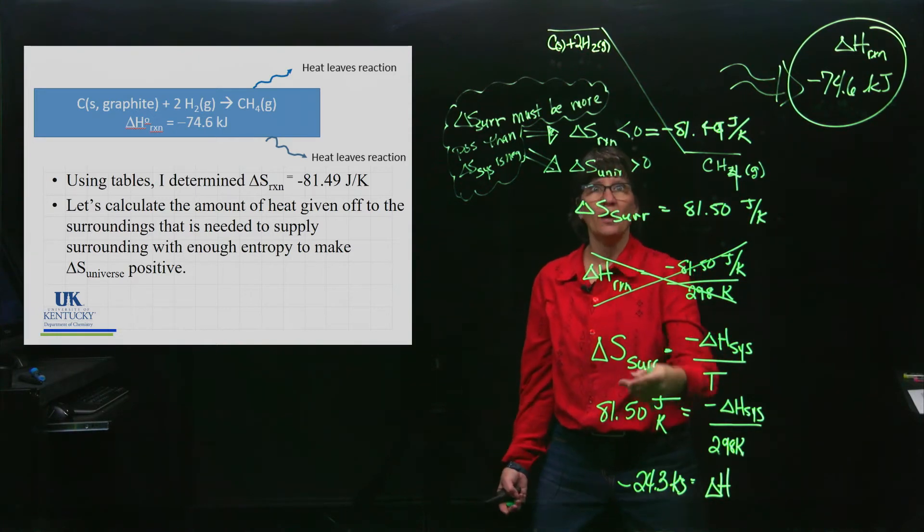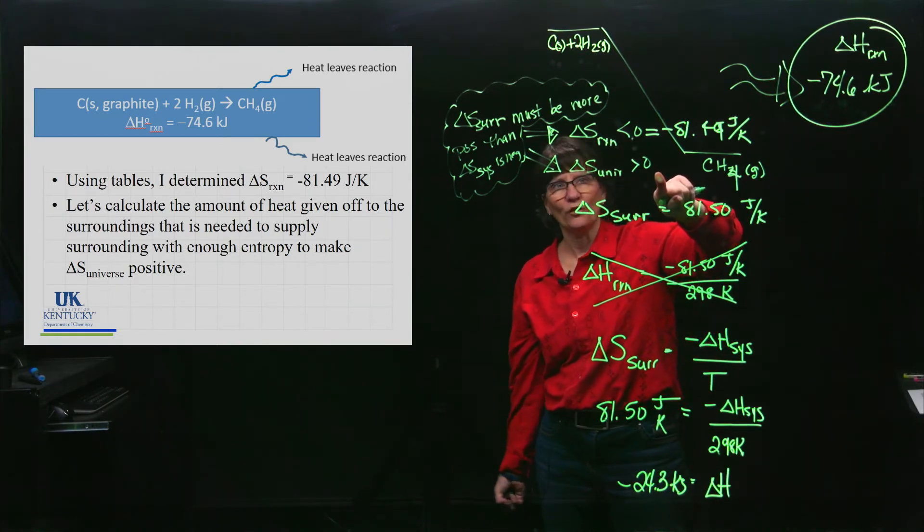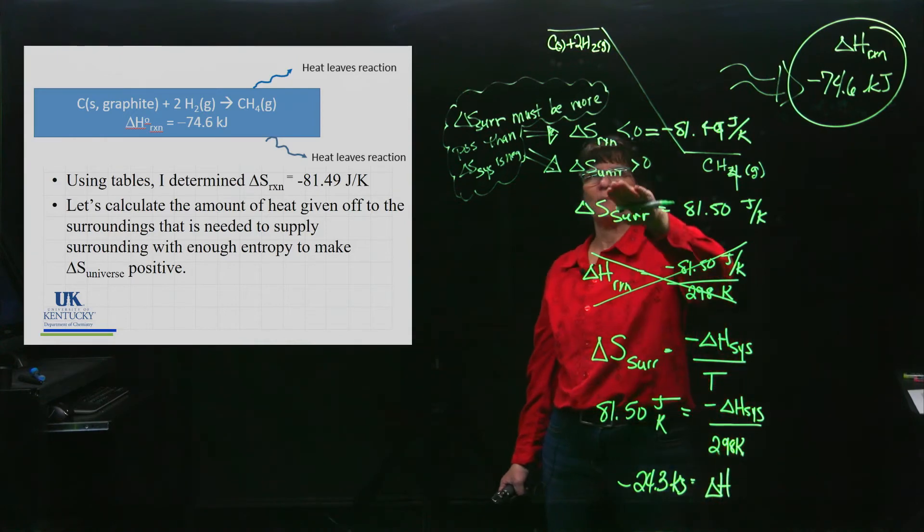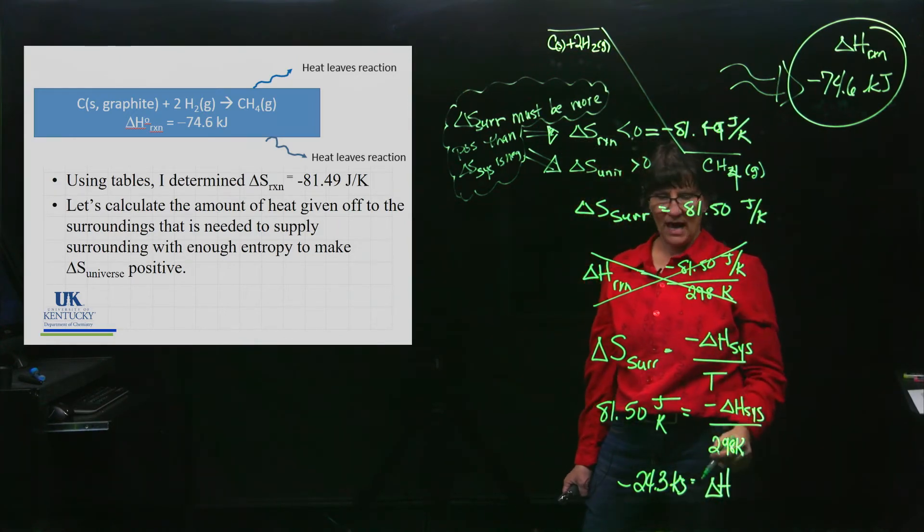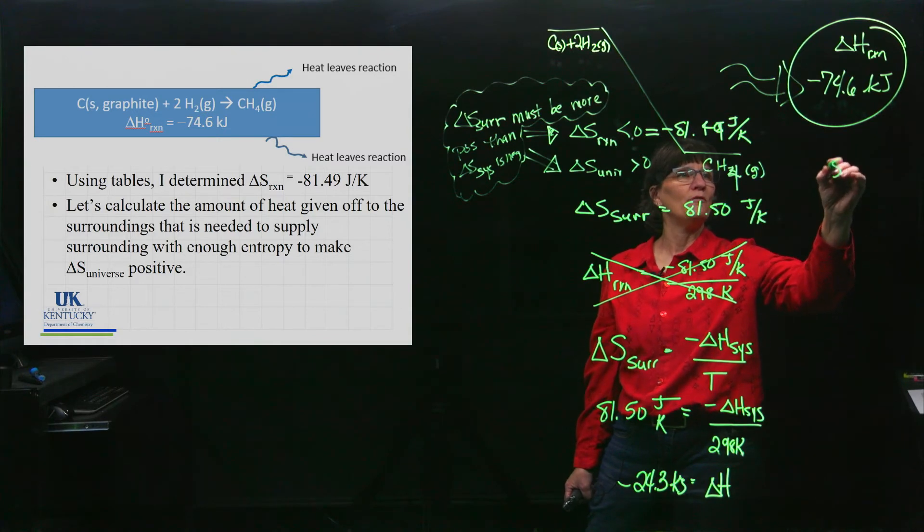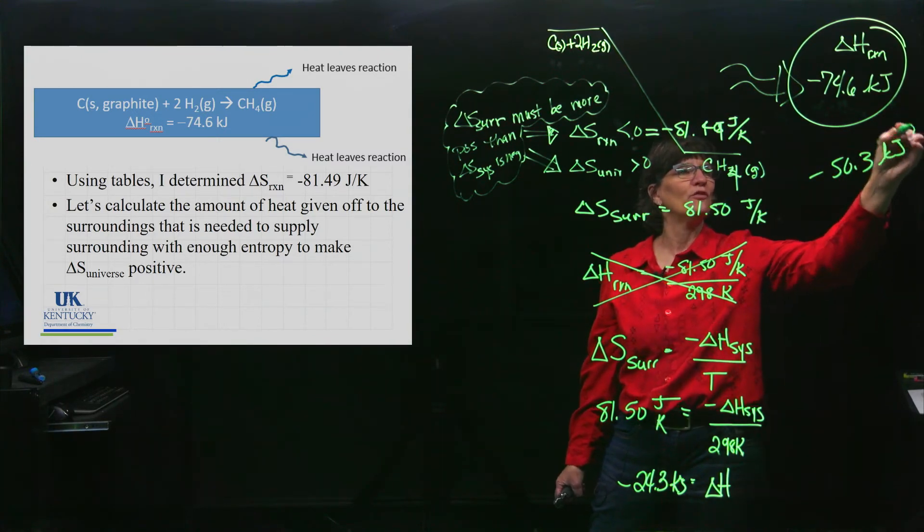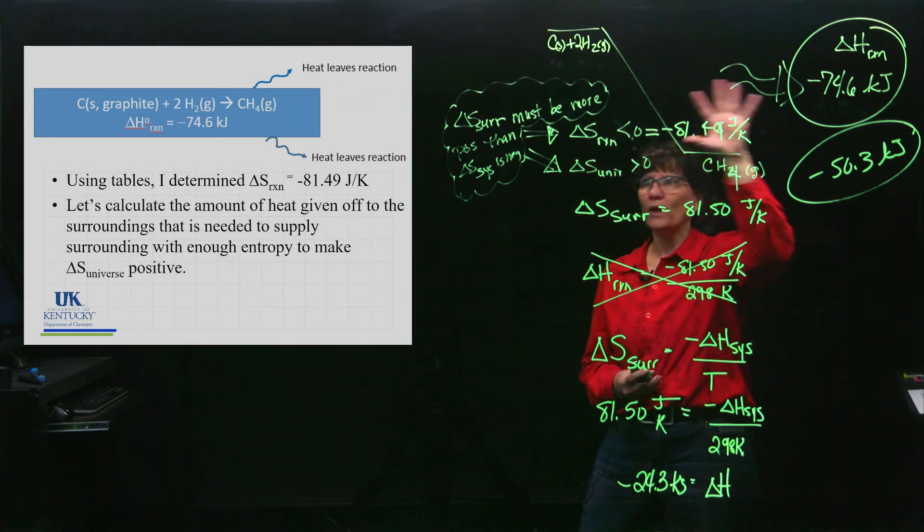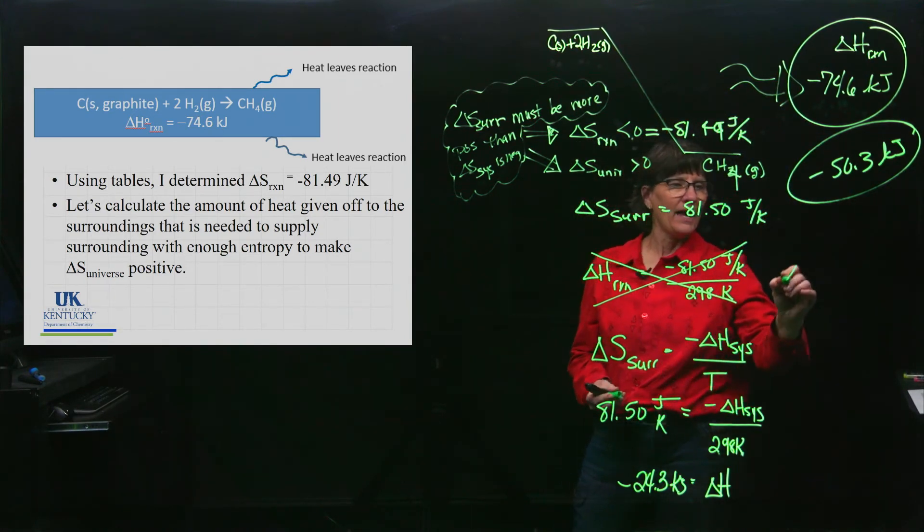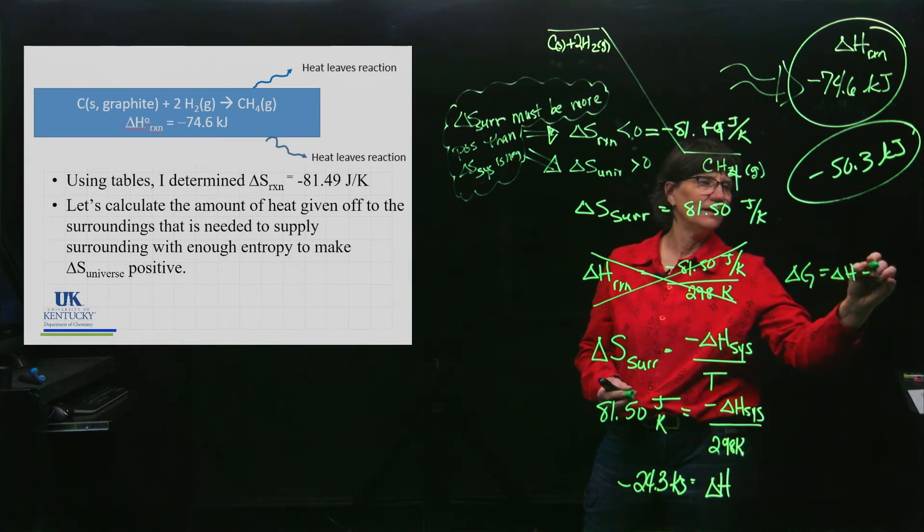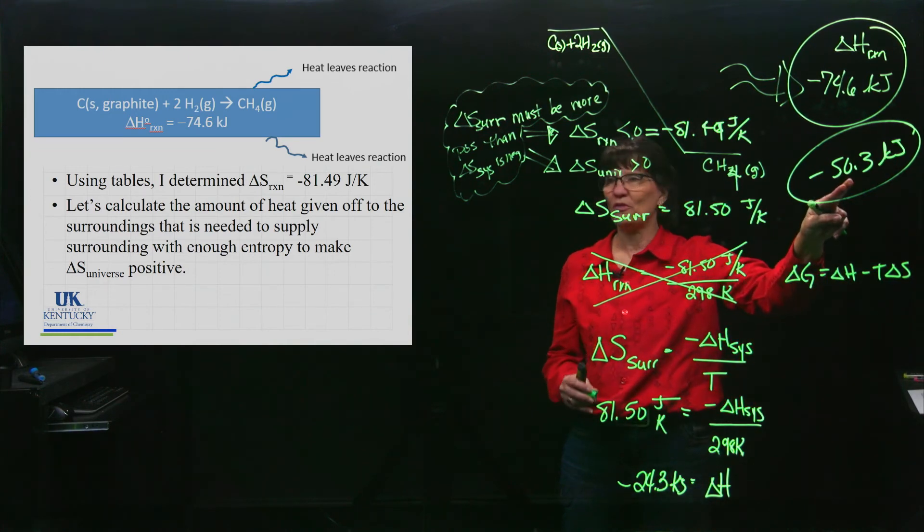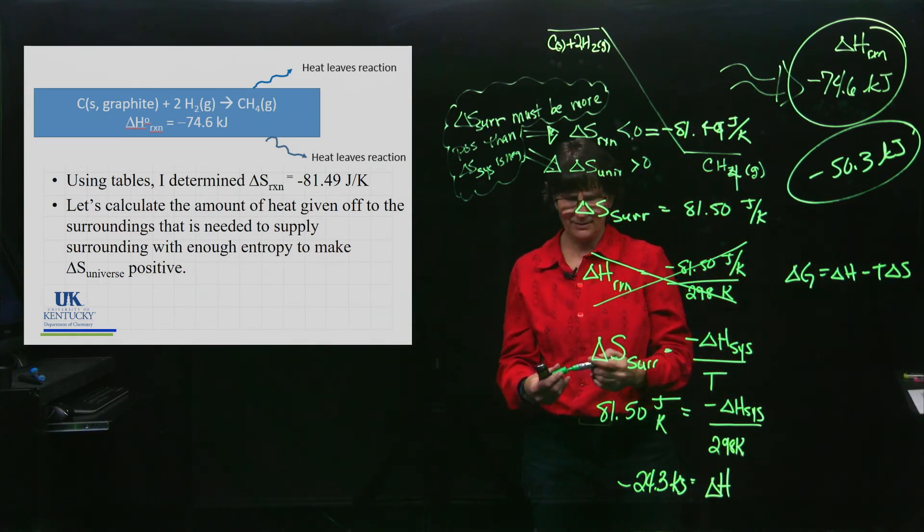That's why it's free and available. I needed this much of it to make my universe positive. The rest of it - that would be 50.3 kilojoules - would be free and available to do work. I basically used that information to come up with this.